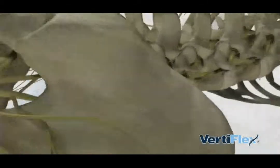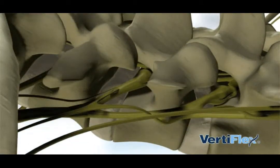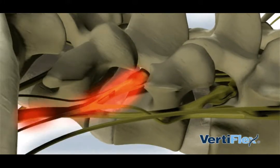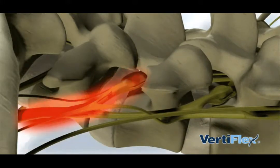Lumbar spinal stenosis is a narrowing of the passageways in the spine that are occupied by the spinal cord and the nerve roots.